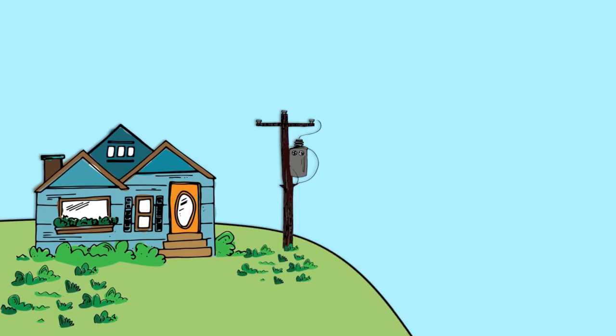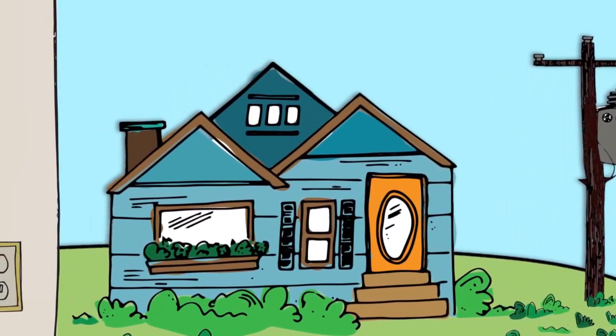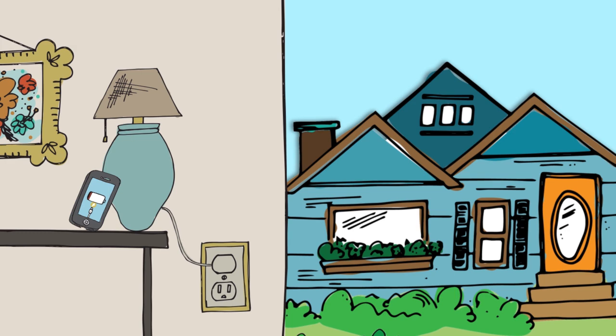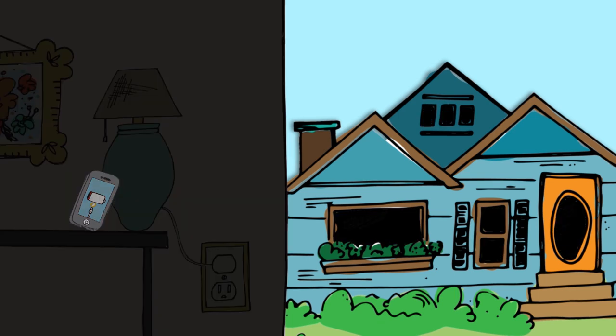Today, Americans rely on electricity more than ever to power their lives. Without a reliable electric grid, we'd all be left in the dark, and once our cell phones ran out of battery life, most of us would be cut off from family and friends.